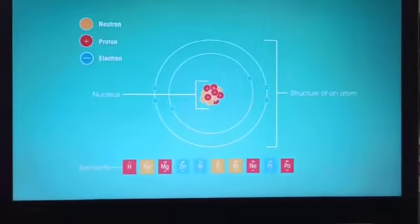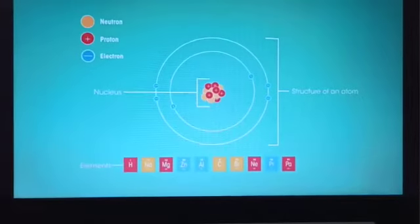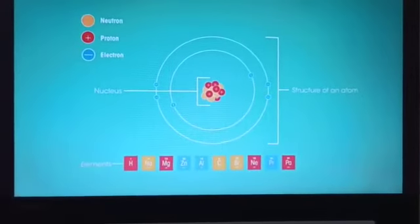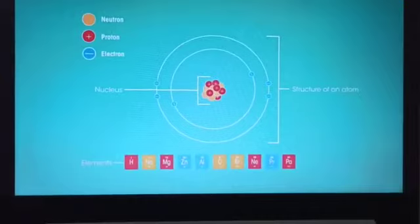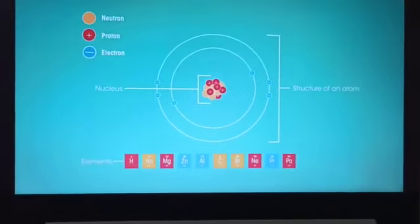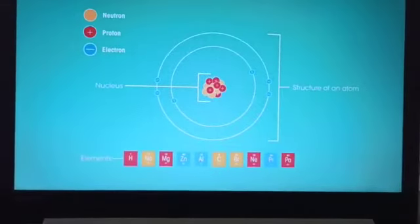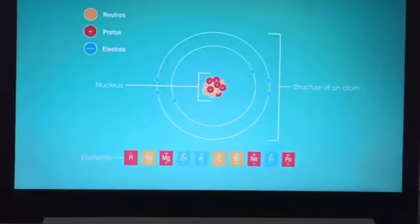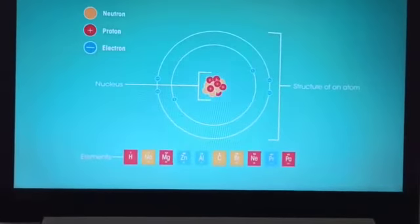Here we have elements of different types: hydrogen, sodium, magnesium, zinc, aluminum, carbon, bromine, neon. These all have different numbers of protons and electrons, protons and neutrons in their atom.